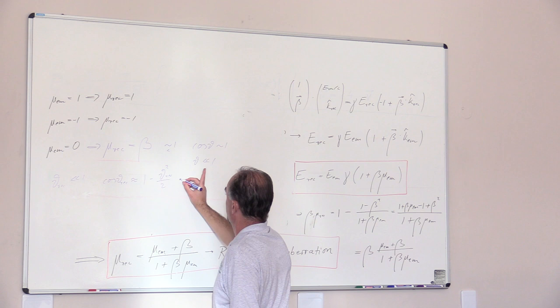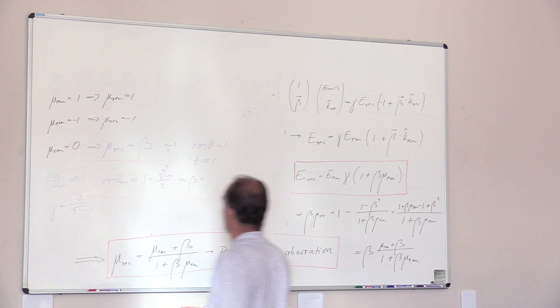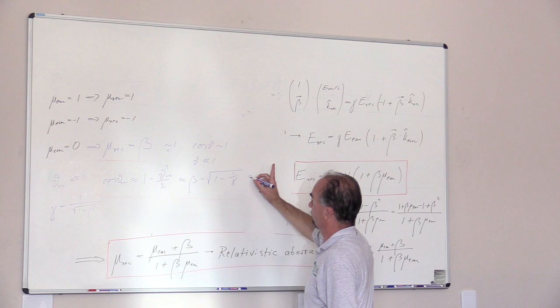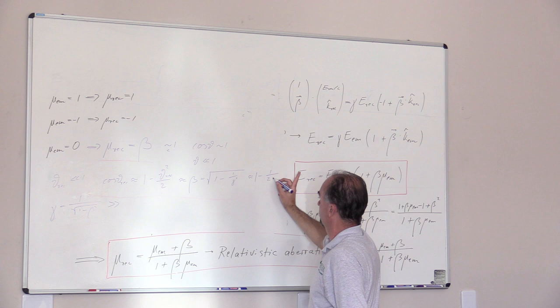But so this is about β. β you can solve. So if γ is 1 over square root 1 minus β squared, you can say β, solve this for β is square root 1 minus 1 over γ squared. And if γ is much larger than 1, 1 over γ squared is very small. So to first order is 1 minus 1 over 2γ squared.